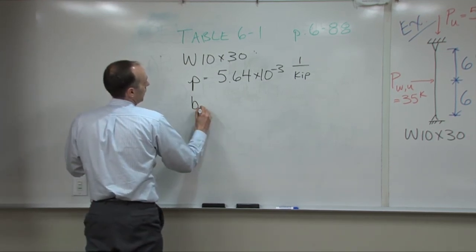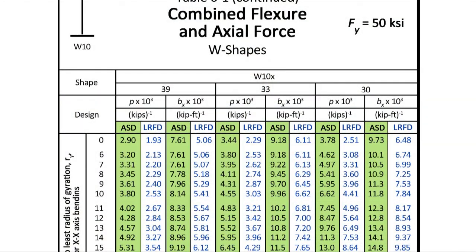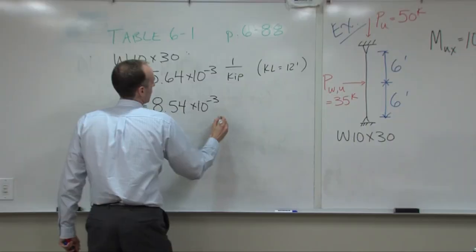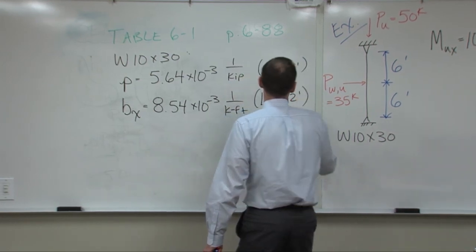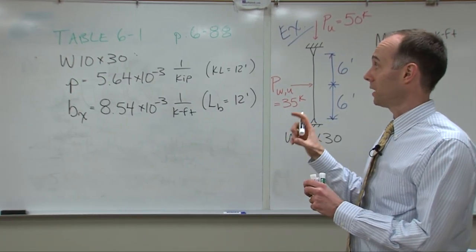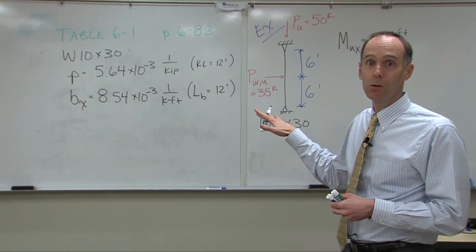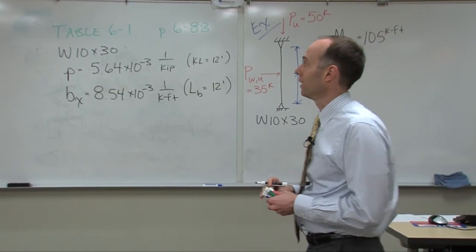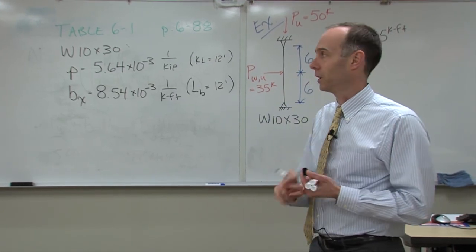The units for Bx are 1 per kip-foot. Looking up at 12 feet, that value is 8.54 × 10⁻³ per kip-foot, at LB = 12 feet. This is a nice table because you don't have to determine which limit state you're in — you just read off the table and it figures all of that out for you, accounting for all the limit states including plastic hinge and lateral torsional buckling.